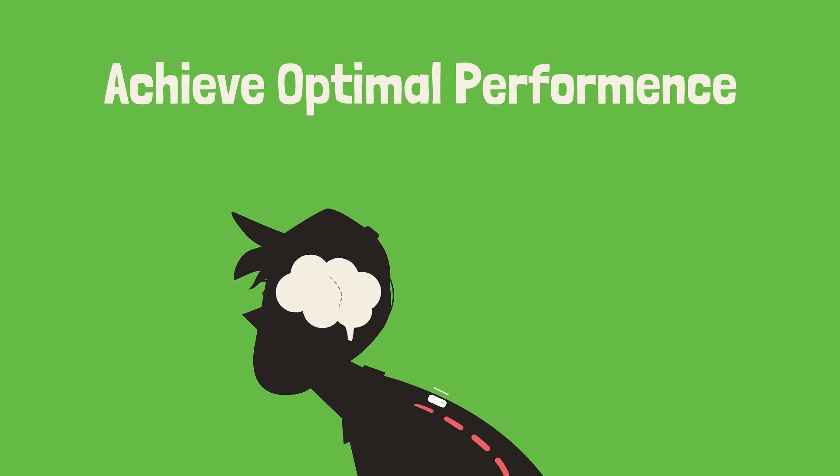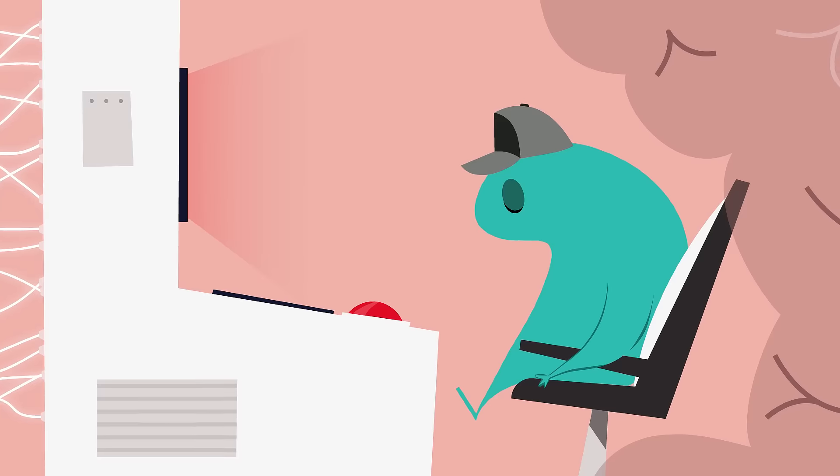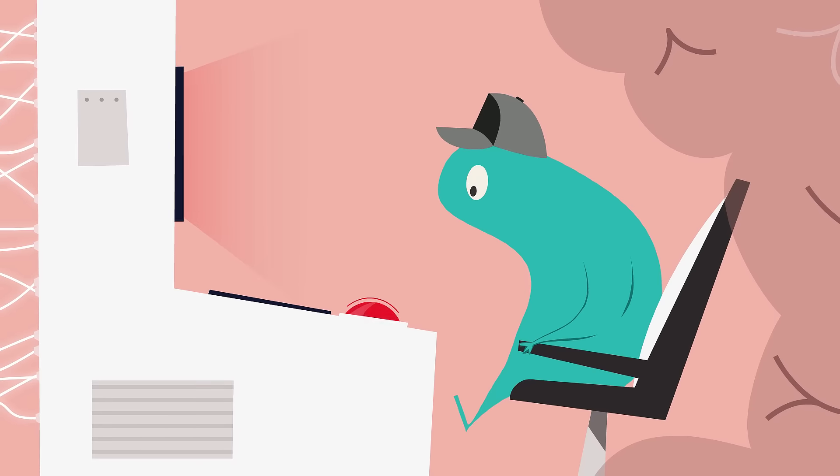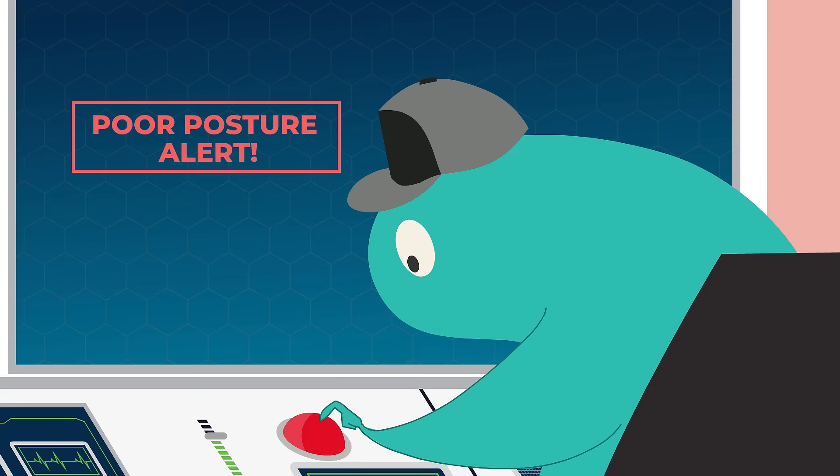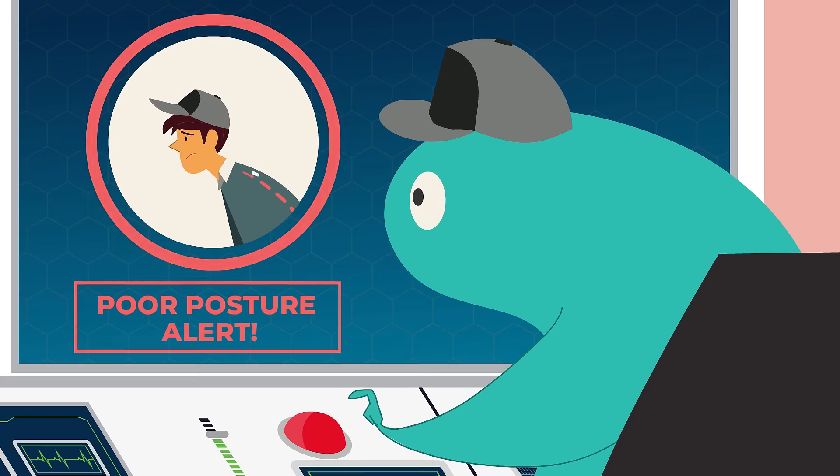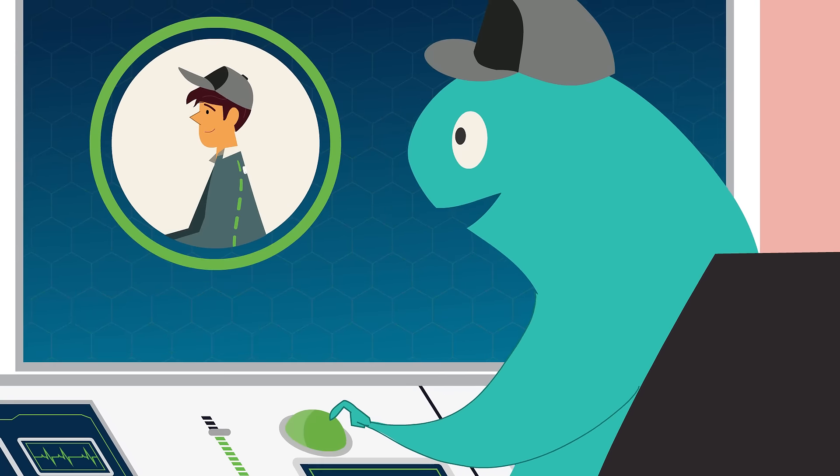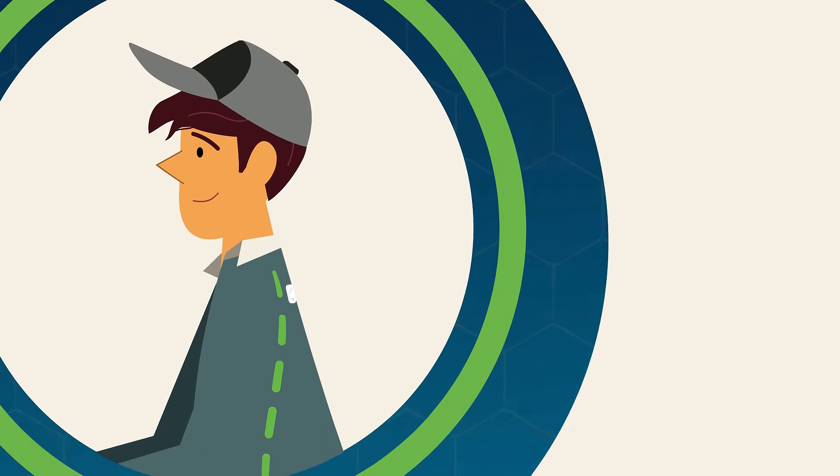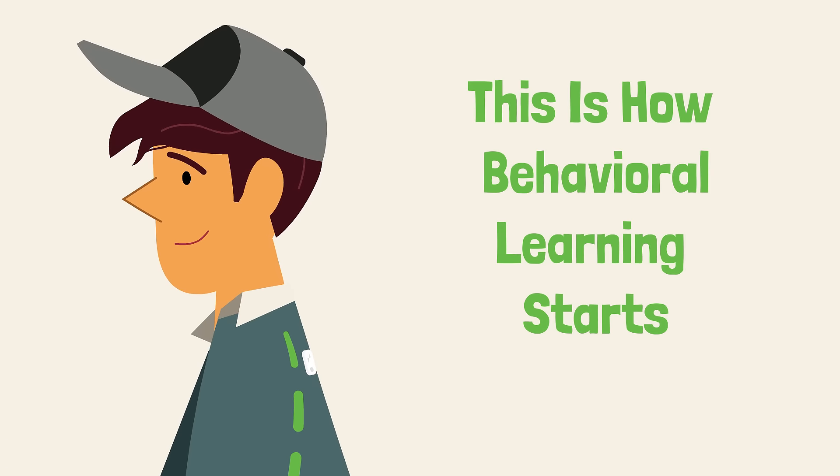Upright uses a gentle vibration to attract the brain's attention to what is happening with your posture in real time. Once the vibration is recognized as a signal for better posture, the brain creates an association between the vibration and good posture. This is how behavioral learning starts.